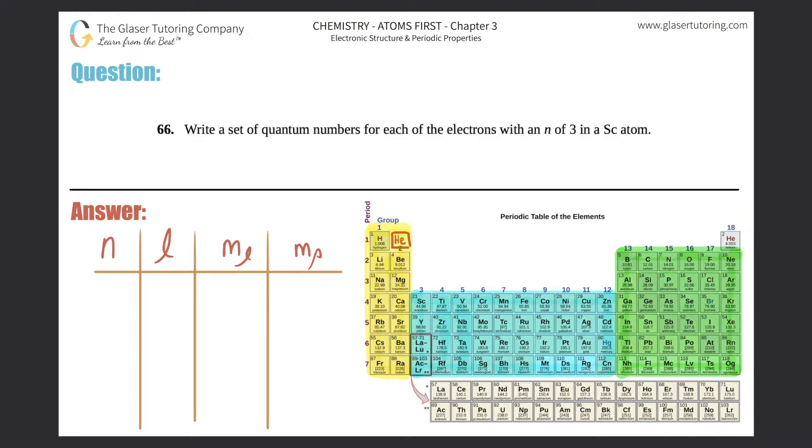Number 66: Write a set of quantum numbers for each of the electrons with n of 3 in a Sc atom. Okay, so first off, Sc is scandium and scandium is right here.